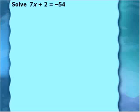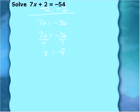We're going to start with undoing any addition or subtraction first, so we're going to subtract the 2 to the other side. When we subtract the 2, we get 7x equal to negative 56. Now we'll undo the multiplication being done to x by the 7, by dividing both sides by 7. So x is equal to negative 8. You should always check your work.